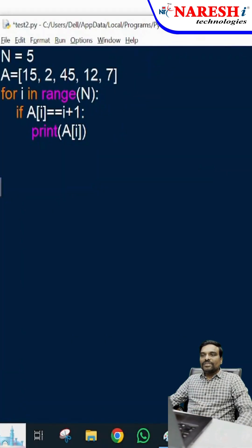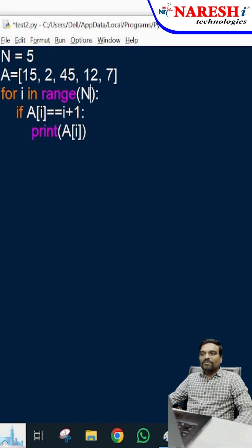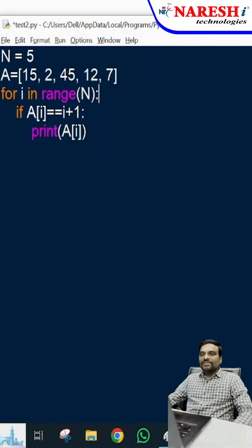If you see the coding here, the value of N is 5, meaning the total number of elements in the list is 5: 15, 2, 45, 12, 7. You are generating indexes of N where N value is 5, so the start is 0 and stop is 5 with step 1. This will generate 5 indexes: 0, 1, 2, 3, 4.